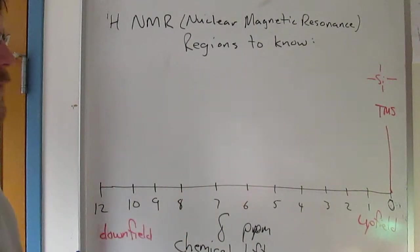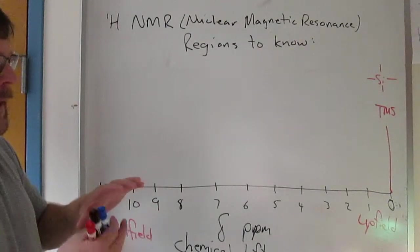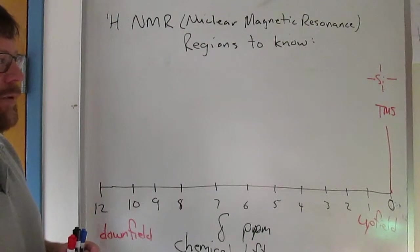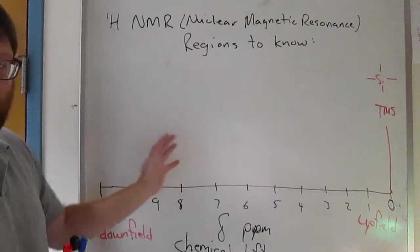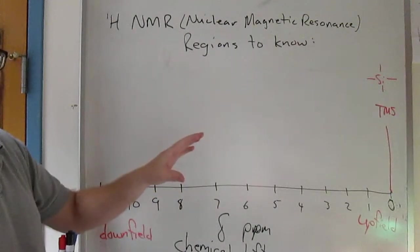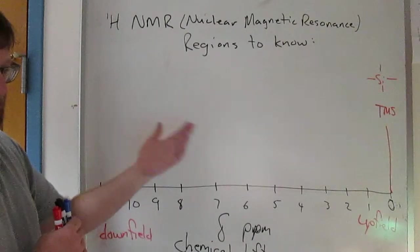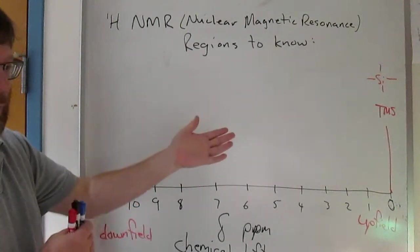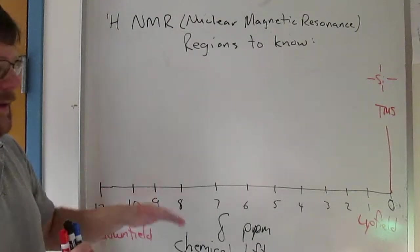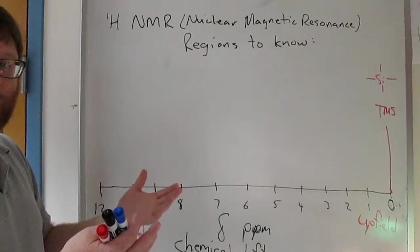Depending on the electronic environment around a proton, they'll show up in different places in the spectrum. To obtain this spectrum, we're applying a magnetic field, the magnetically active nuclei line up with the field, and the field they experience is the field you apply plus whatever magnetic field comes from the electrons around them.